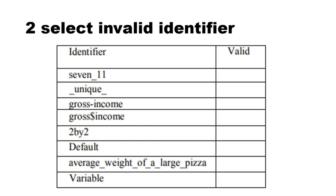If you have any information on the computer, you can call it 7, which is 11. An identifier that is valid will be a valid identifier or valid indicator.